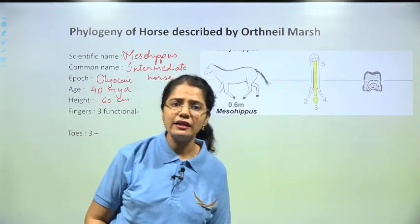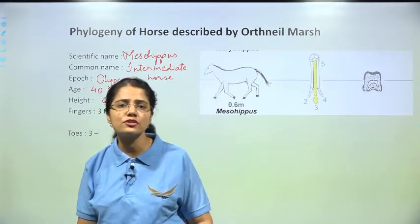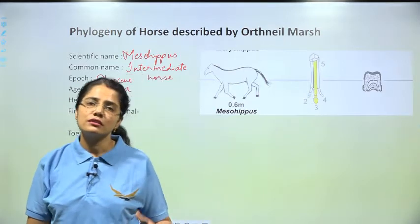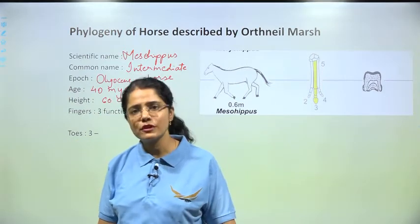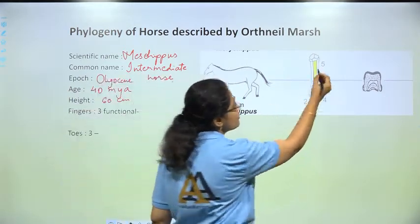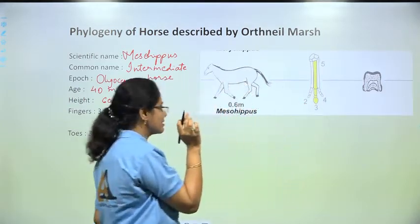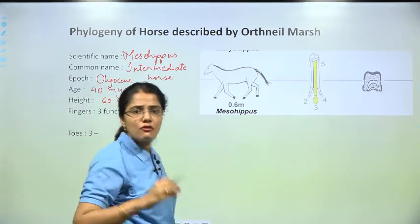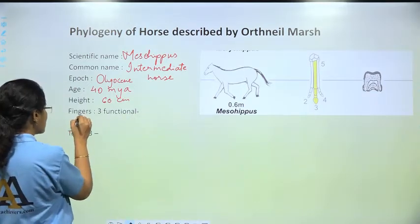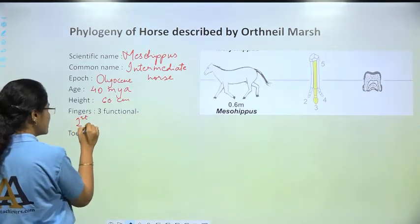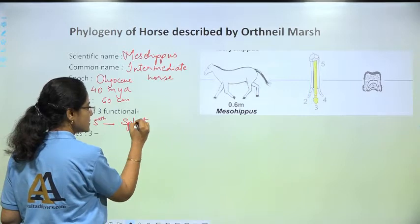Mesohippus had three functional fingers, meaning the other two had become splint. The first and the fifth had become splint, and the second, third, and fourth were functional — as you can see in the figure.